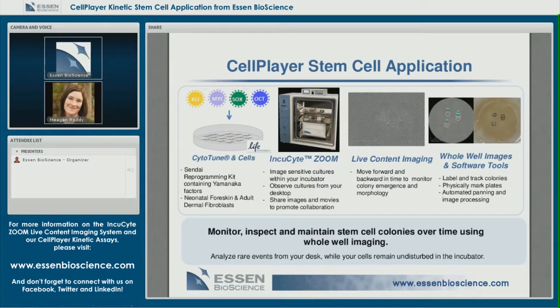In this way, the reprogramming cells — which are very sensitive cultures — spend as much time as possible in the incubator. With the live content imaging approach we gather kinetic information about cultures so that we can move forward or backward in time to inspect wells, find colonies, and see what they look like from their start to the last scan before positive selection.